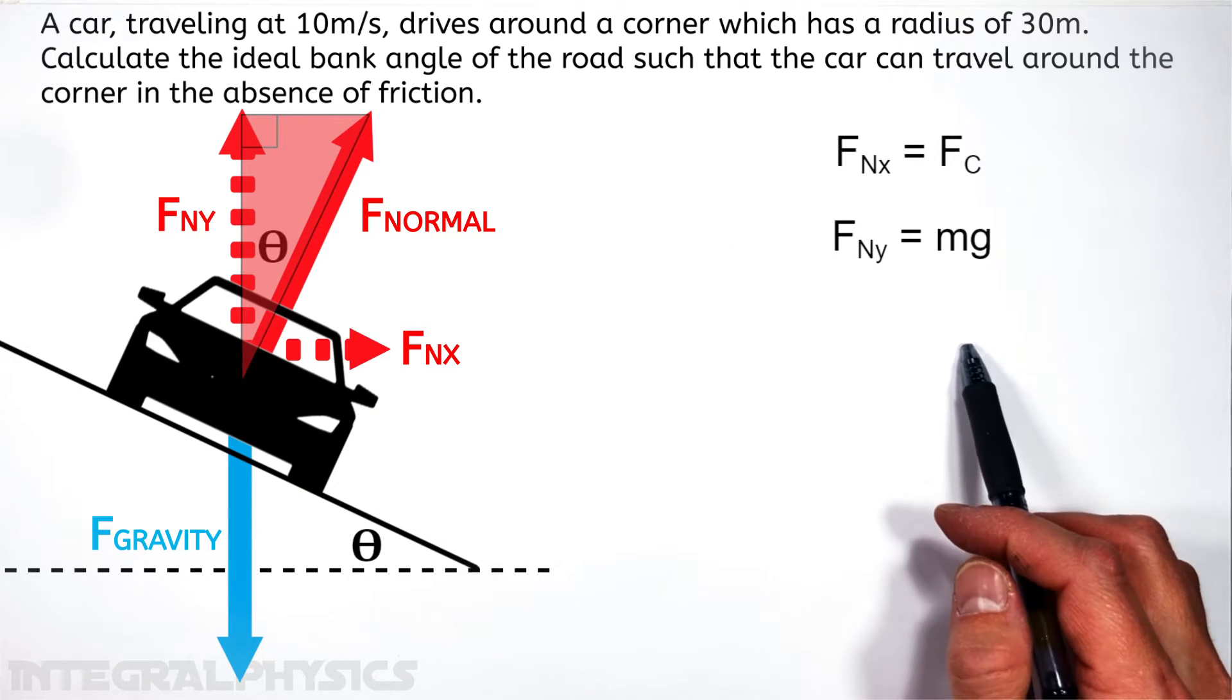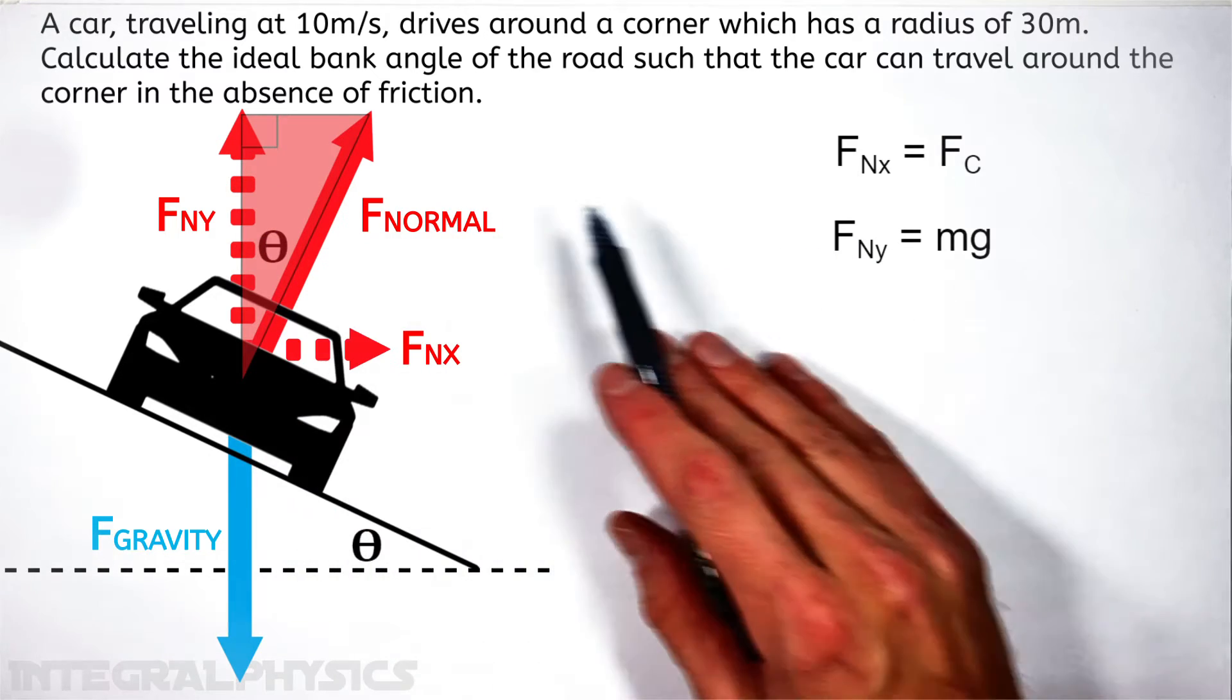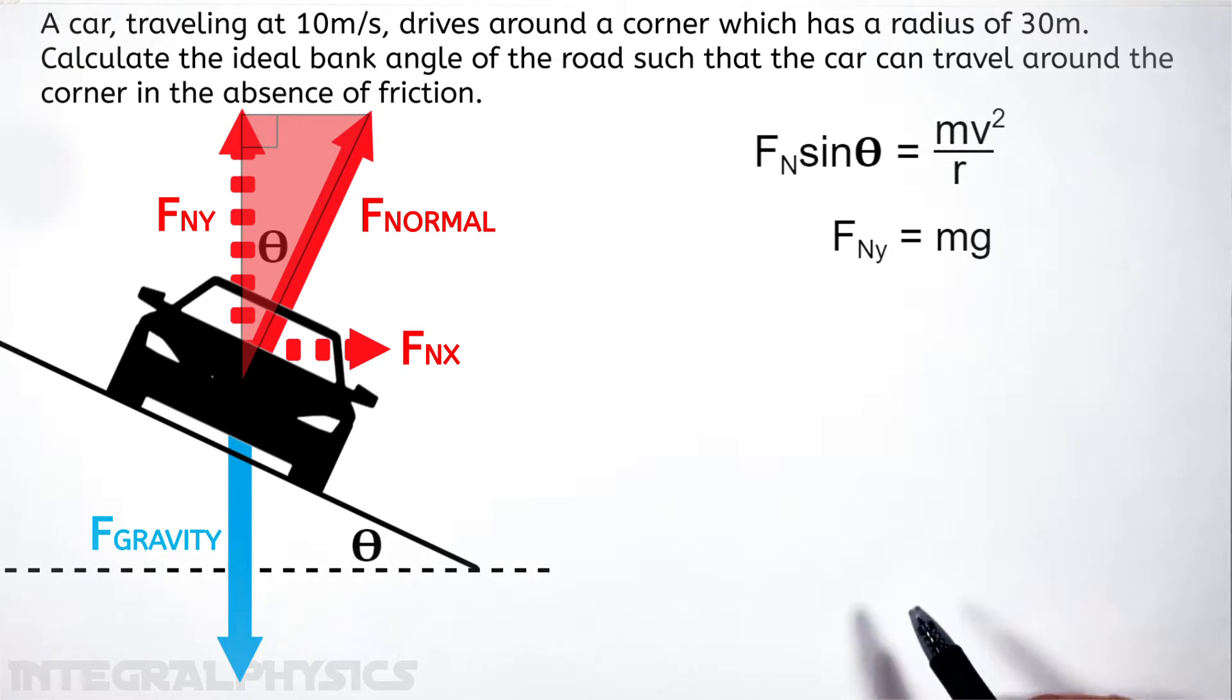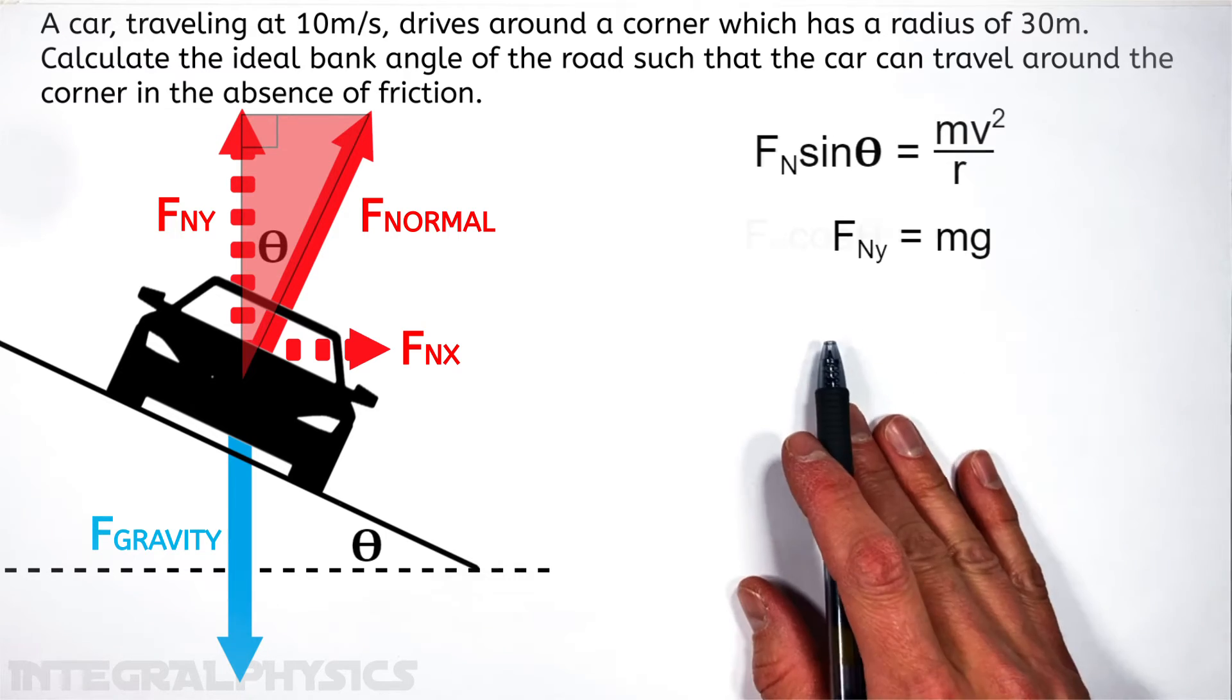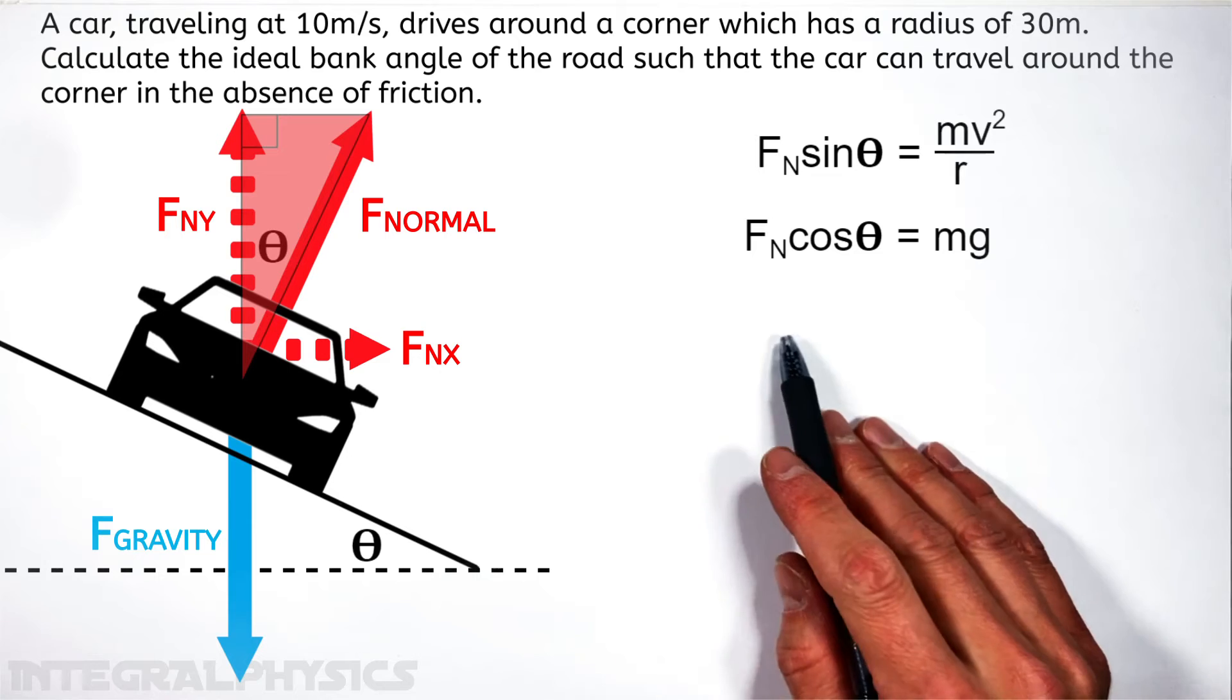So going back over here, we can sub in for Fn x, Fn sine theta. And then we're going to plug in our equation for centripetal force, that's mv squared over r. And in the y-axis, we're going to say Fn cosine theta, because that's the adjacent side, is equal to mg.